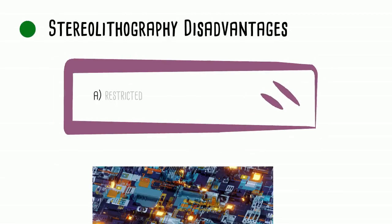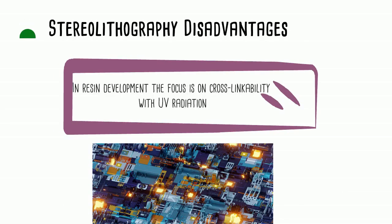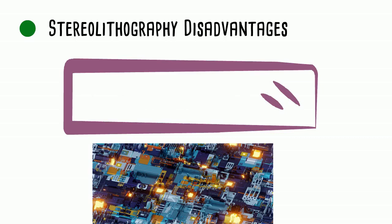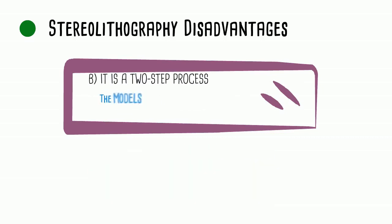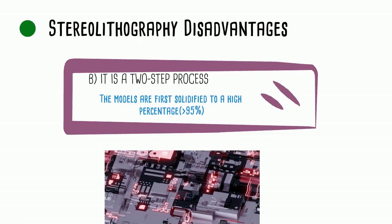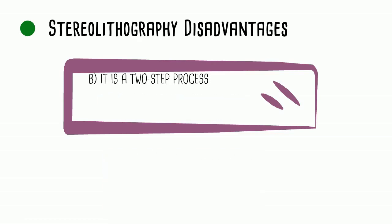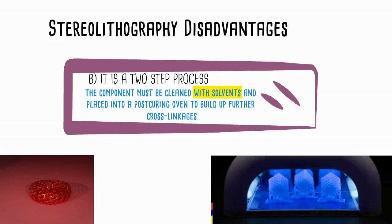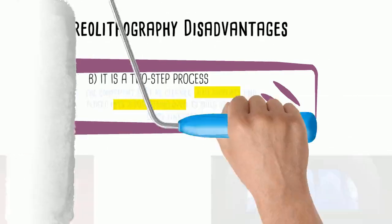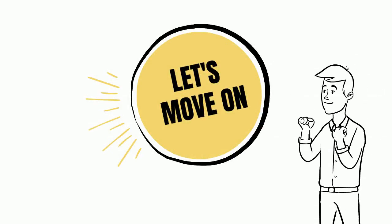Disadvantages of stereo lithography: it is restricted to photosensitive material, and in resin development the focus is on cross-linkability with UV radiation. It is a two-step process — the models are first solidified to a high percentage, over 95 percent. Afterwards, the component must be cleaned with solvents and placed into a post-curing oven to build up further cross-linkages.